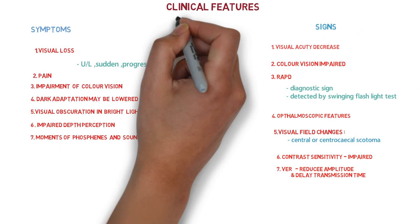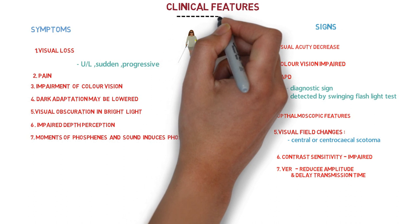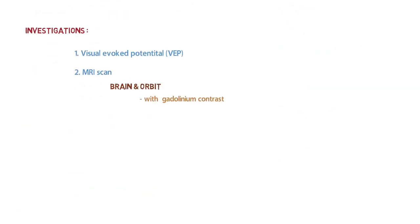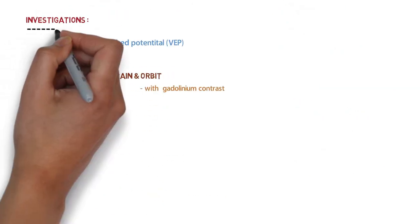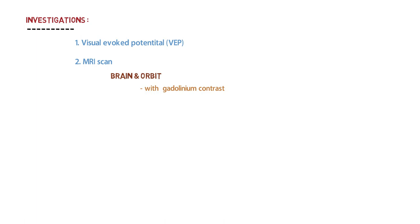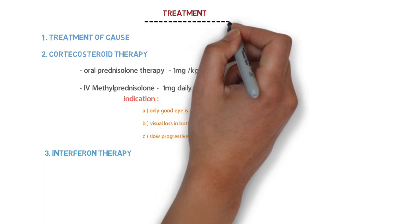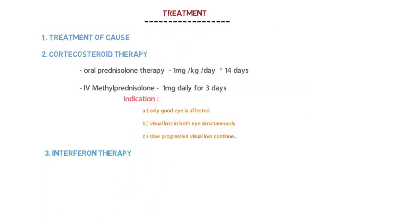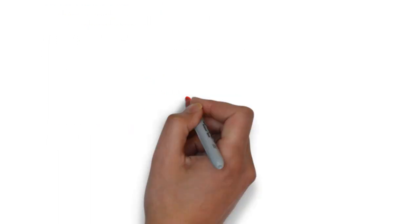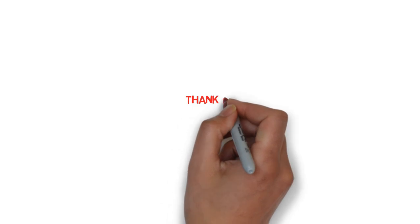After that, we looked at clinical features of optic neuritis. Then there is investigation - VEP and MRI scan for brain and orbit. Then we took a look at treatment: treatment of underlying cause, corticosteroid therapy, and interferon therapy. This is all about optic neuritis, which is a very important topic. Thank you guys for watching this video.